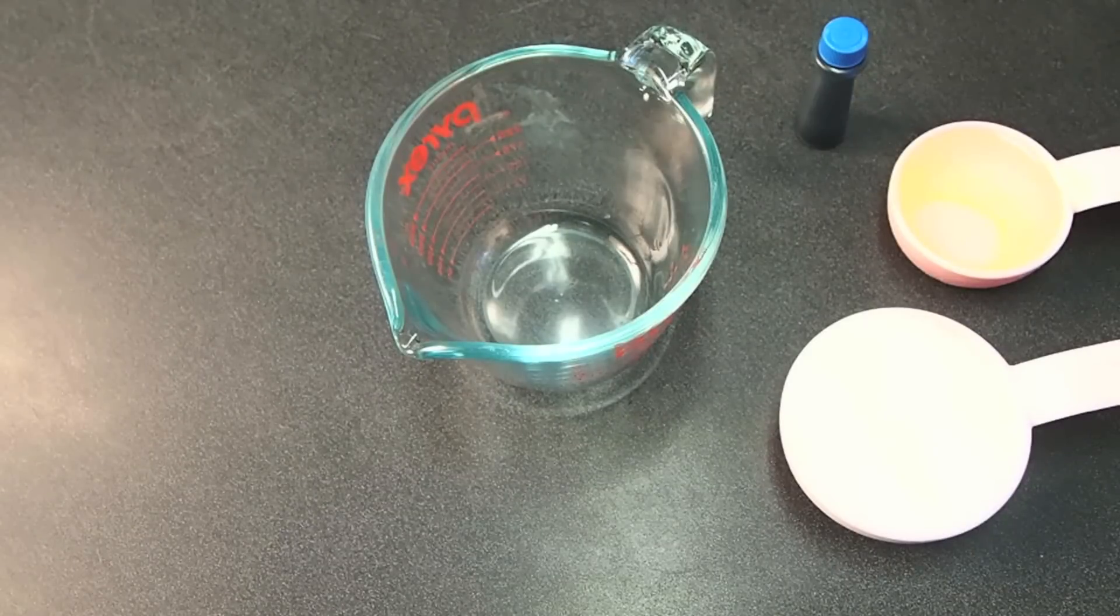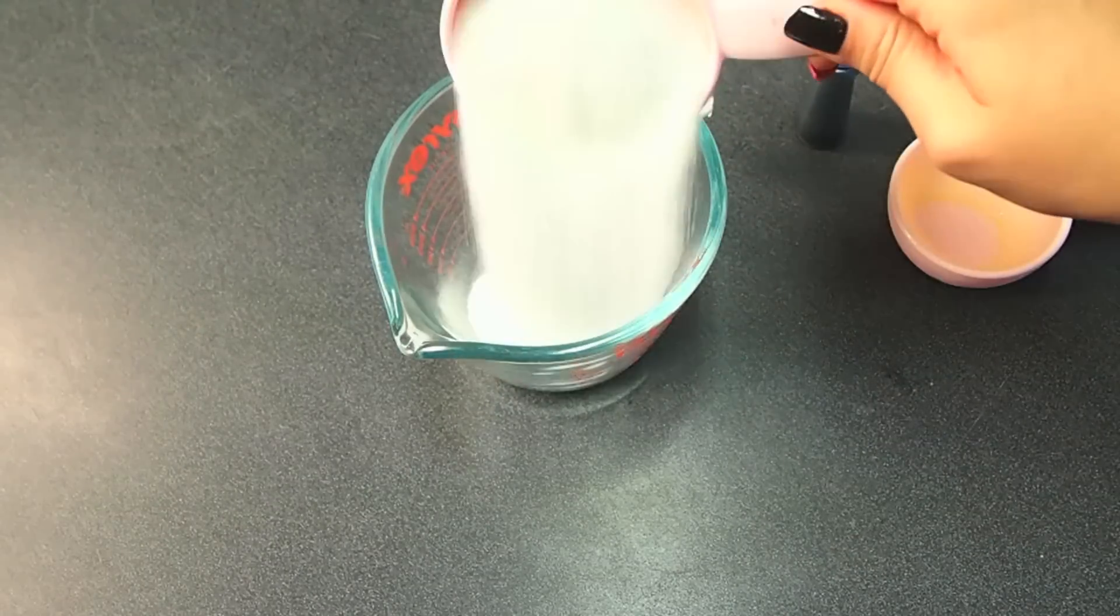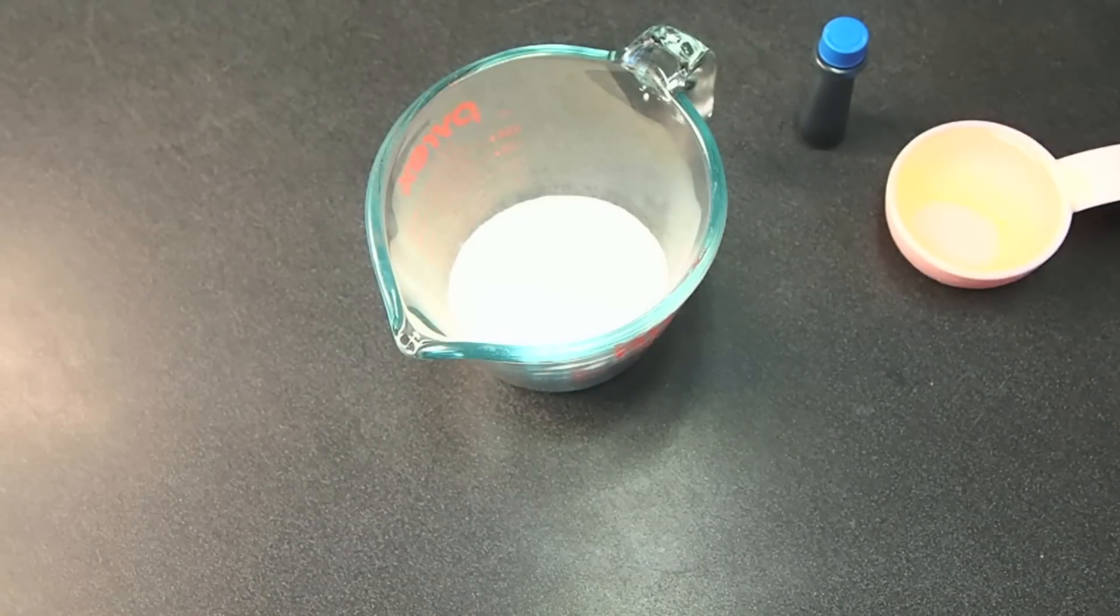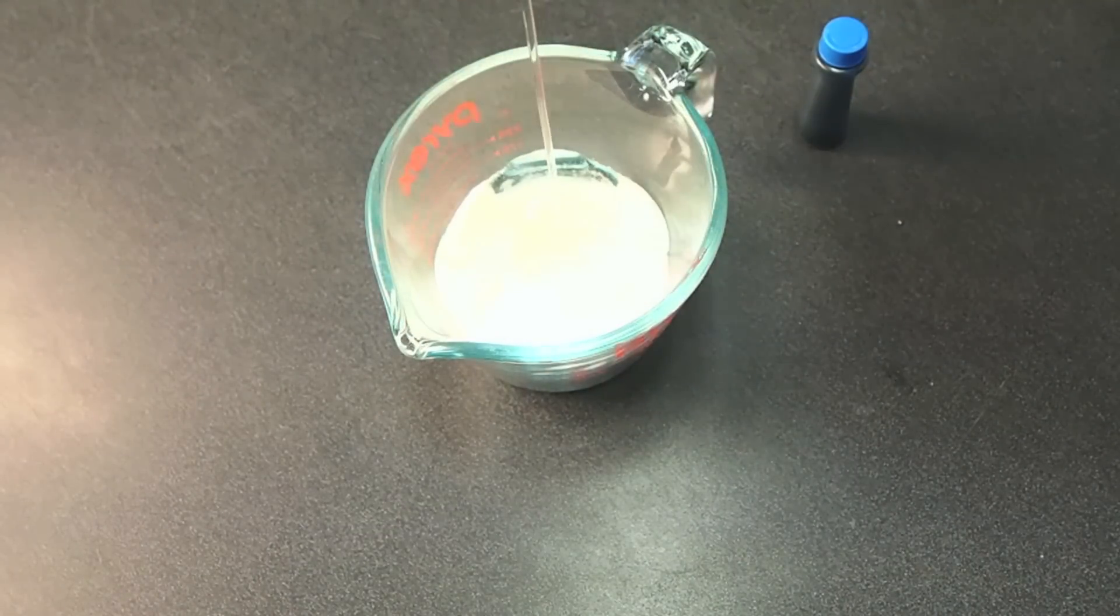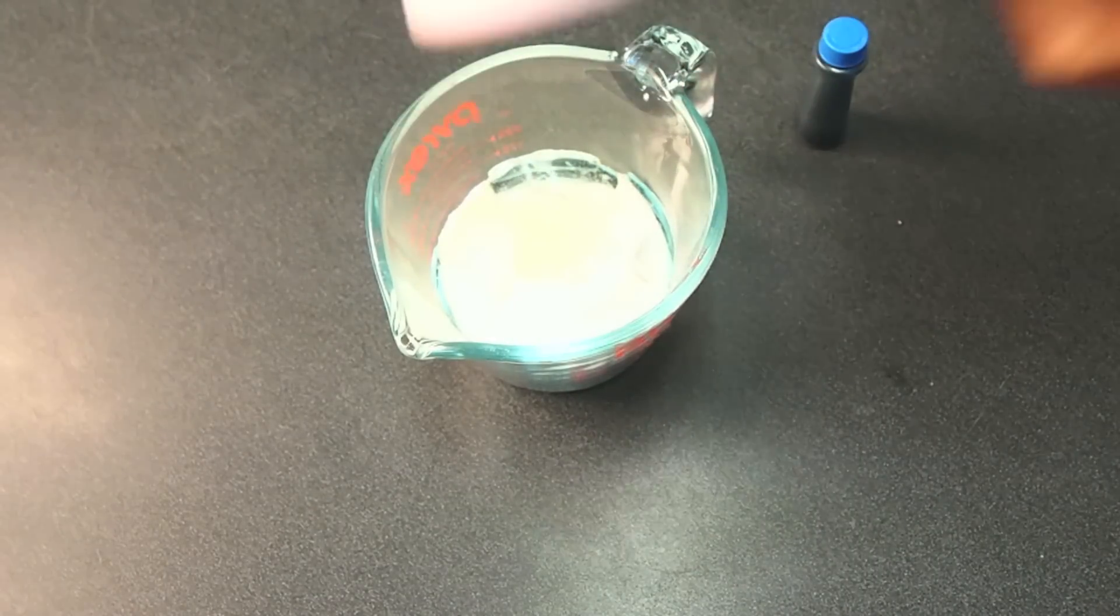These are the only ingredients that you'll need, so it's super simple, very easy and quick. You'll need some sugar—I have some regular granulated sugar—and then drip in some corn syrup. If you first spray it with a little bit of cooking spray, it'll slip right out just like this.